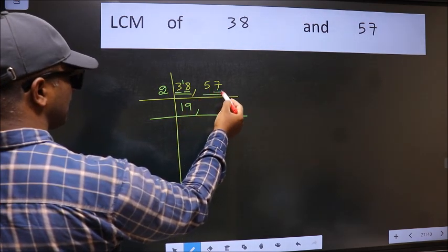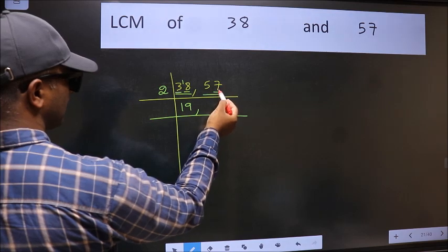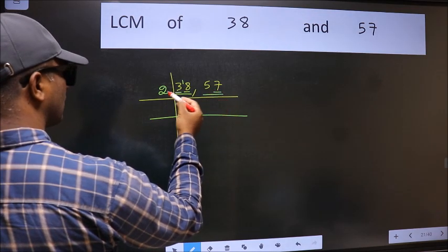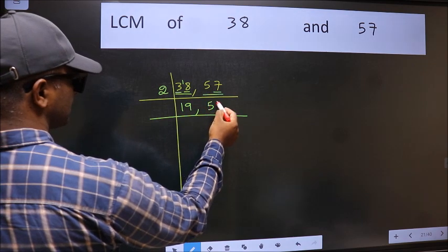The other number 57, last digit 7, not even. So this number is not divisible by 2. So you write it down as it is.